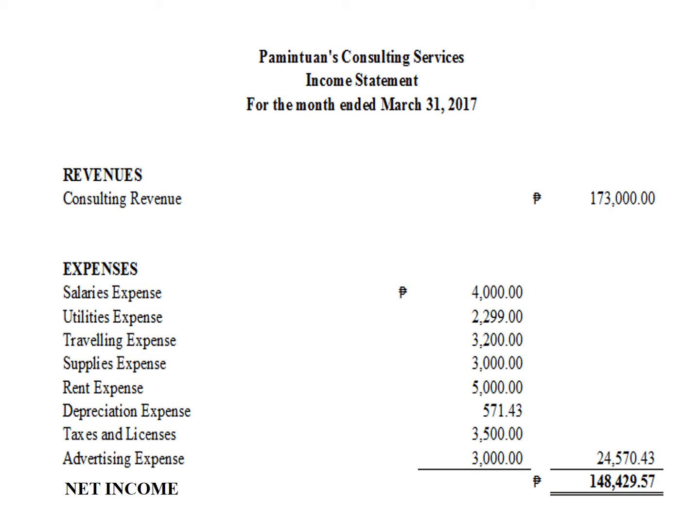This is an example of an income statement format. Whether it's the income statement or the balance sheet, we always should have a heading. A heading contains the business name — Paminto and Consulting Services — the name of the report — income statement — and then the date: For the month ended March 31, 2017. For the income statement, the date should be stated like this: 'For the month ended March 31, 2017.' It means the report shows the revenues and expenses from March 1 to March 31.